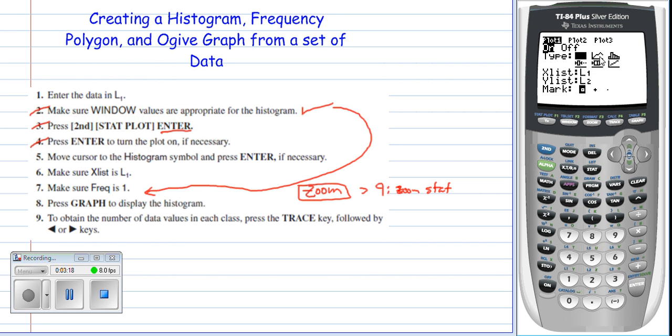Second one is going to be your frequency polygon. Third one is a histogram. This one down here is called a box plot. That's a box plot with an outlier. That's a box plot or whisker graph. And the last one is your cumulative frequency polygon or better known as the ogive. So we're going to go back using our side-to-side arrows to the histogram. Press enter.